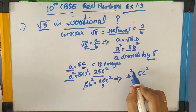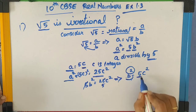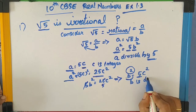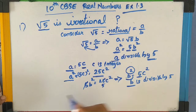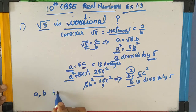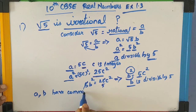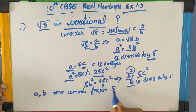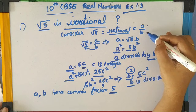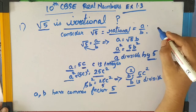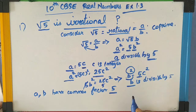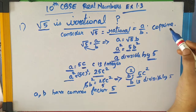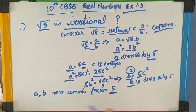If B squared is divisible by 5, then B is also divisible by 5. Now we have A is divisible by 5 and B is divisible by 5. From this, what can you understand? Yes — A and B have a common factor. But what have we said already? A and B are co-primes, meaning they don't have a common factor. So here a contradiction arises.